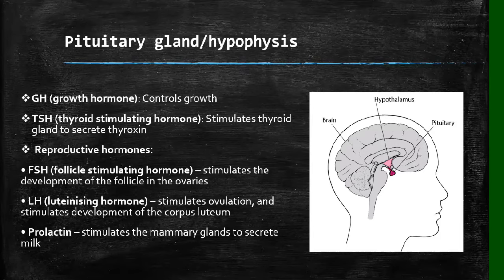The growth hormone is straightforward — even the name tells you it has to do with growth. It controls growth. If too much growth hormone is released in your body, you get a condition called gigantism where somebody becomes very big. But if this hormone is not secreted in sufficient amounts, the person will not develop properly and their growth will be disturbed.